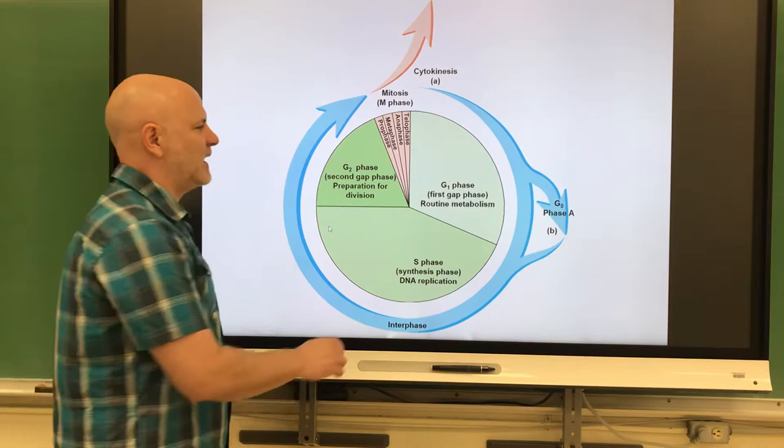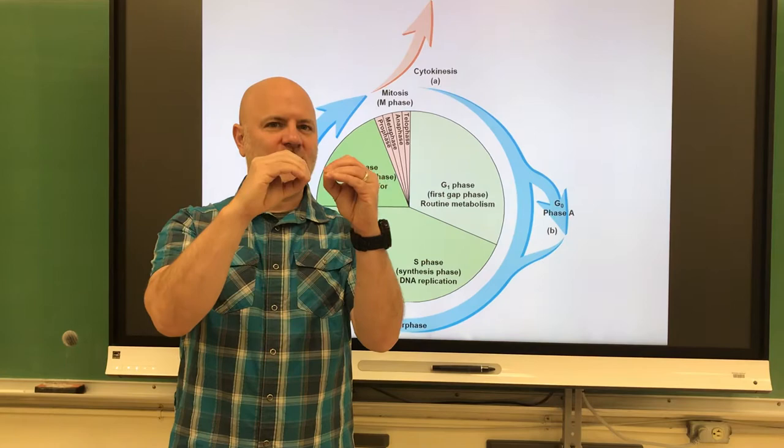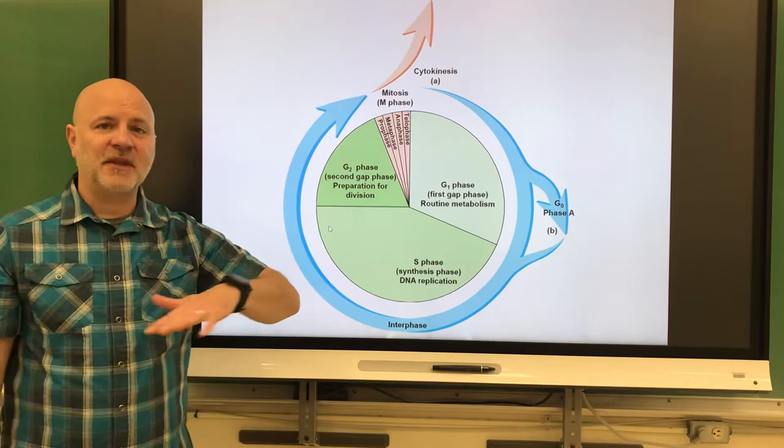After cell division is what we call the G1 phase. This is when most cell growth occurs. If you have one cell and it divides into two cells, those cells are smaller than the original cell, so they have to grow back to the size of the original cell. The cell increases in size and also in its number of organelles. Most cells are going to stop at the end of this phase.